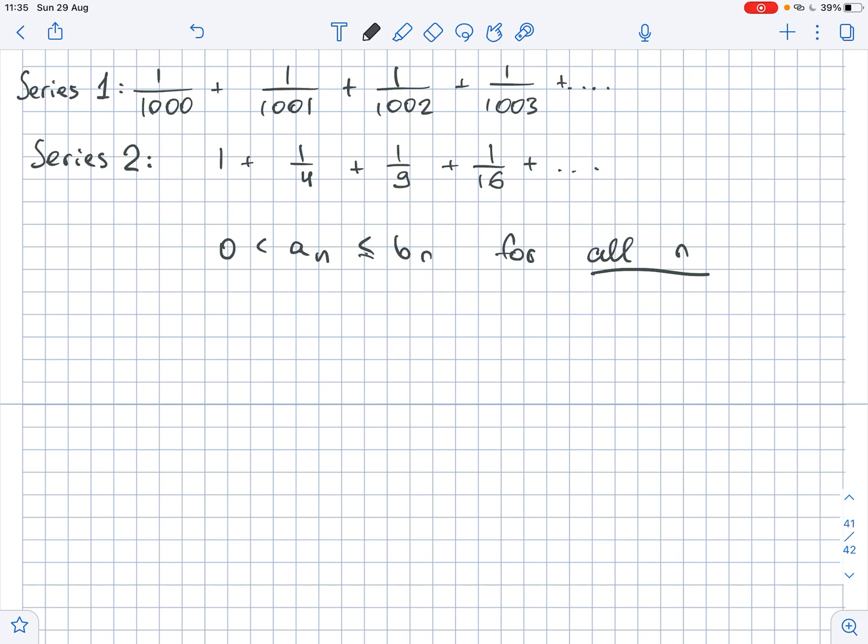However, we let an be the n-th term of the first series and bn be the n-th term of the second series. Then we get that an equals 1 over 999 plus n, while bn equals 1 over n squared.